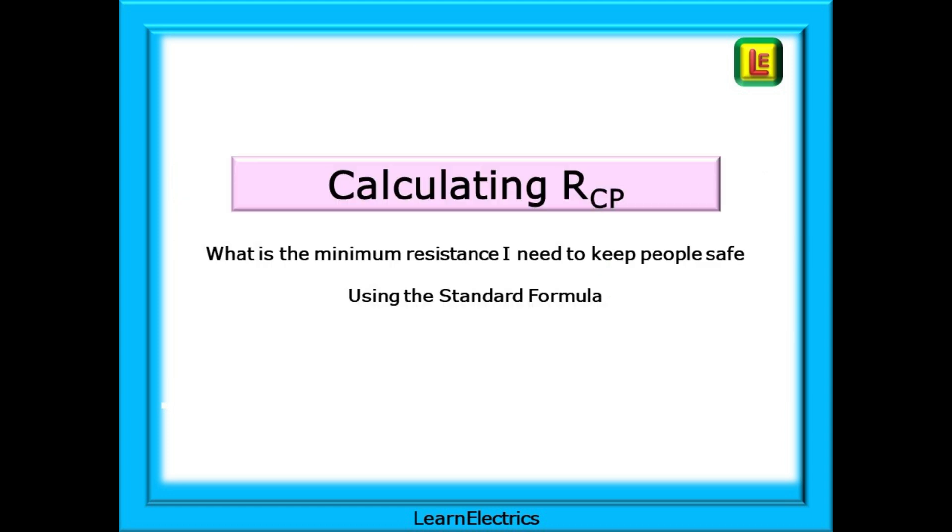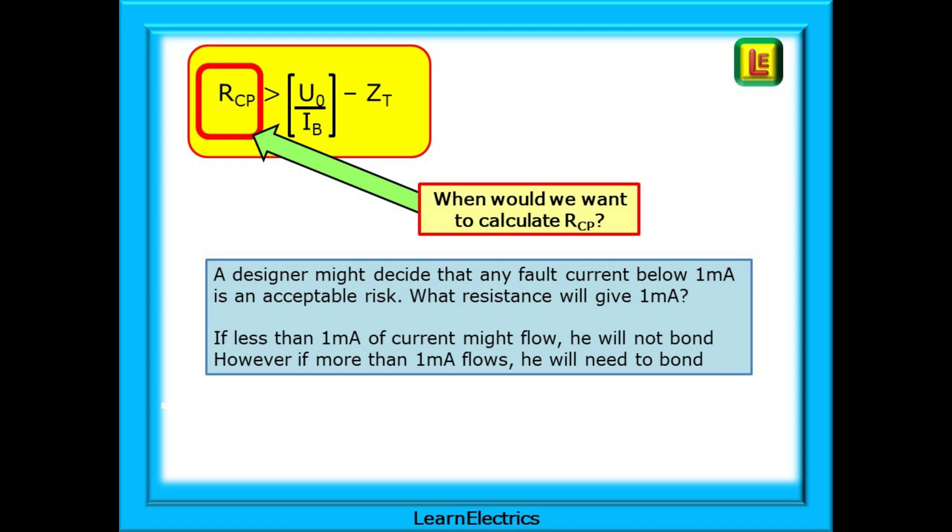So what is the minimum resistance needed between conductive parts and the installation's main earth terminal to keep people safe? For this, we can use a standard formula as shown in Guidance Note 8. When would we want to calculate RCP? Let's look.